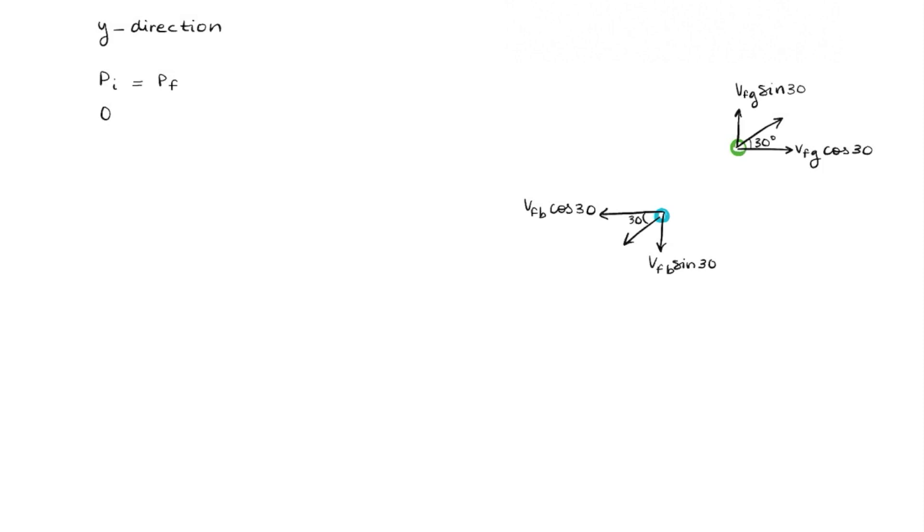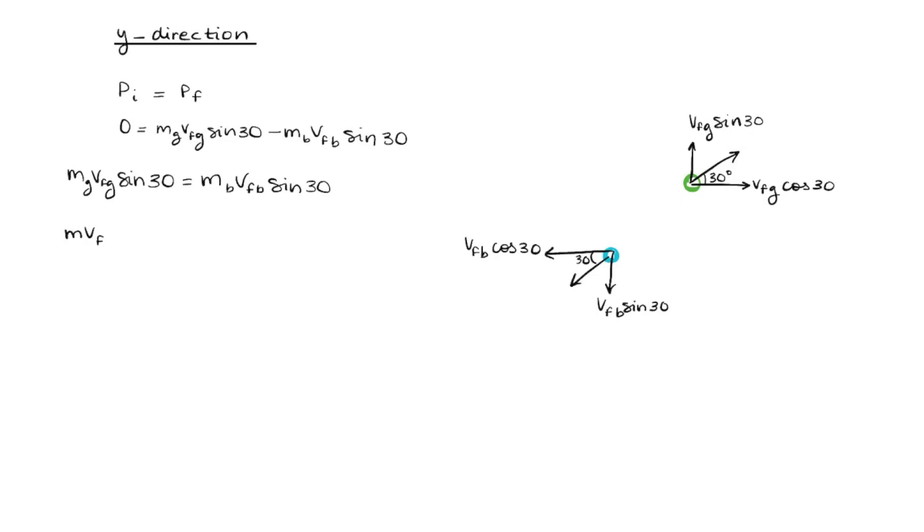Since neither of the pucks were moving up and down in the initial phase, we can say that the initial momentum was zero, and the final was momentum of green, which is upwards, and minus momentum of blue because it's downwards. So we can say mg times v-final g sin 30. So if we add the momentum of the blue puck on both sides, we can see that the momentum of both of these pucks equal each other in the y-direction. Then we can substitute our placeholder value for the masses. Once again, the m's cancel out and the sin 30. And we can see that the final velocity of the green is 1.2 times the final velocity of the blue. Save that so we can use it later on.